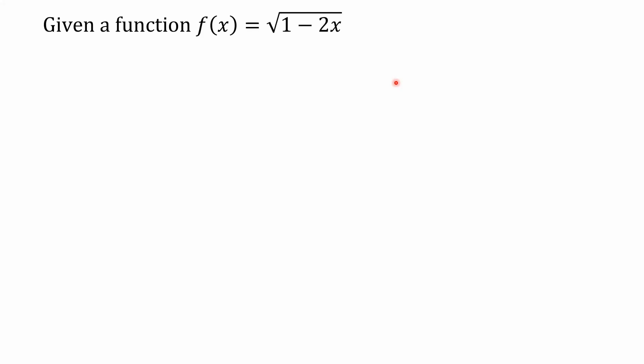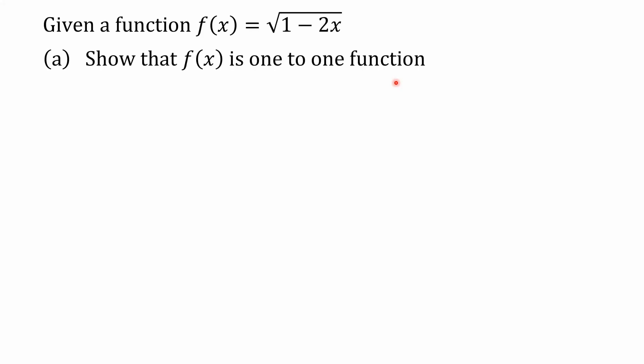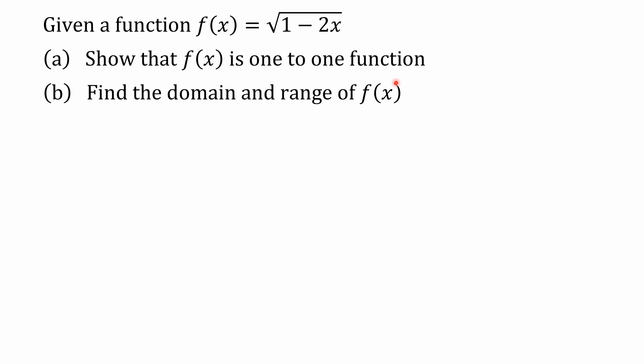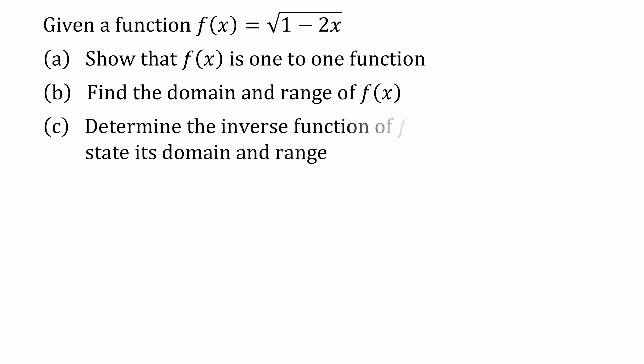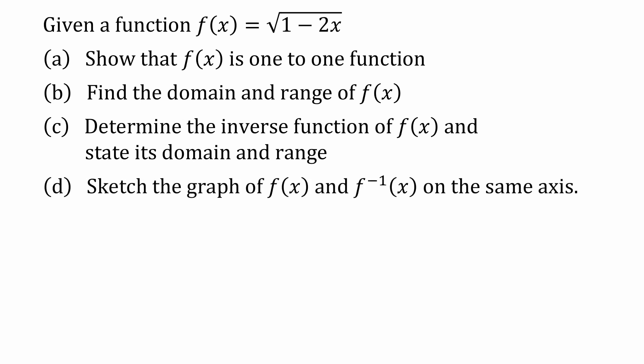Given the function f(x) equals the square root of 1 minus 2x. The first question is to show that f(x) is a one-to-one function. B is to find the domain and range of f(x). C is to determine the inverse function of f(x) and state its domain and range. And then to sketch the graph of f(x) and f-inverse on the same axis.